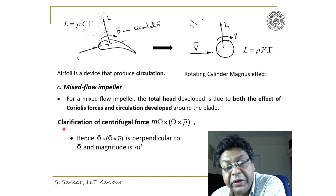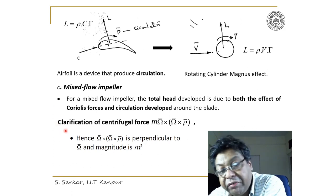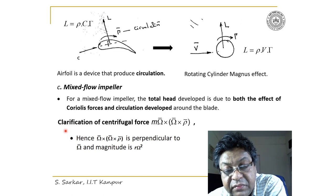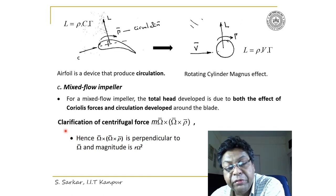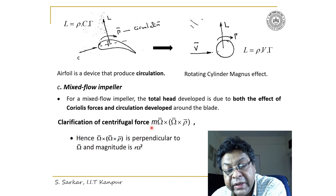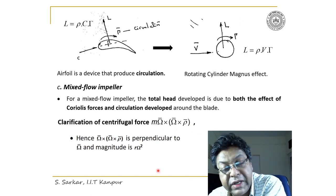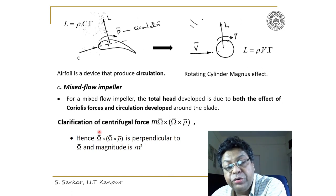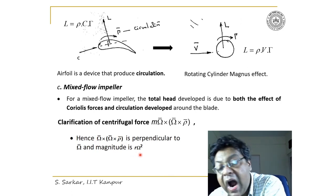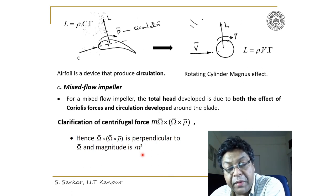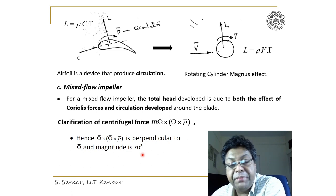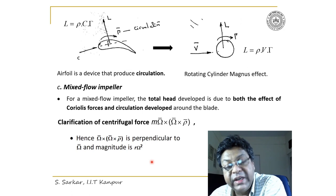Regarding the centrifugal force m(ω × ω × ρ): if you evaluate ω × (ω × ρ), the magnitude is R·ω², where R is the perpendicular distance from the spinning axis to the point. This magnitude R·ω² is nothing but the centrifugal acceleration.